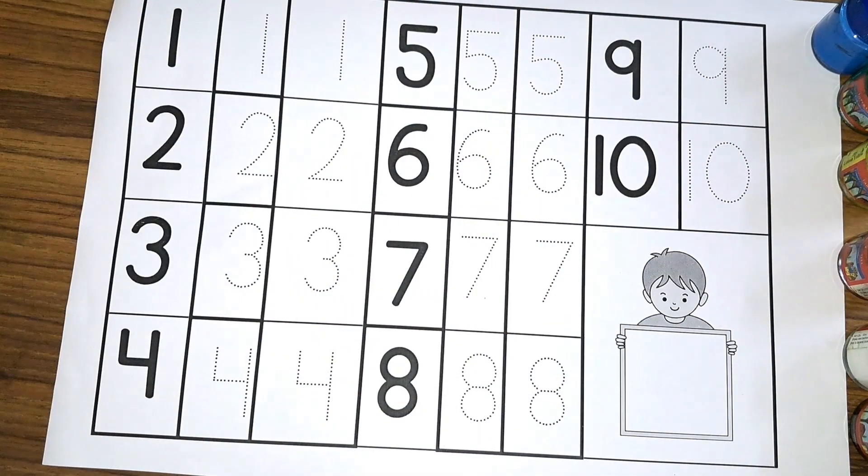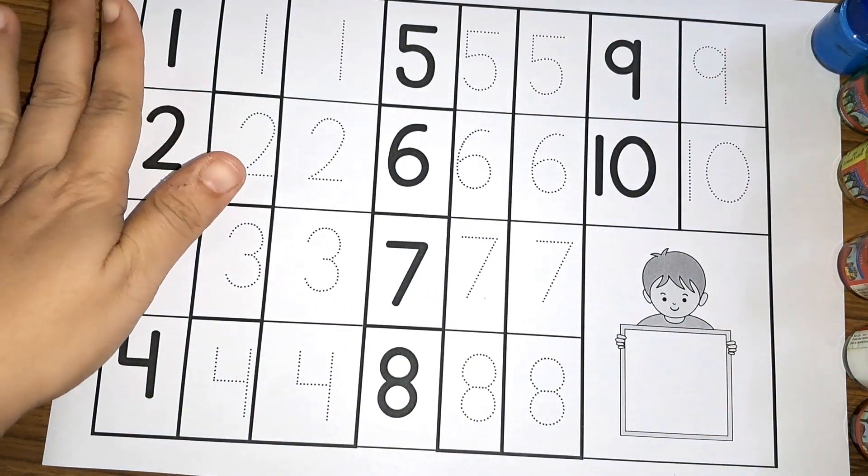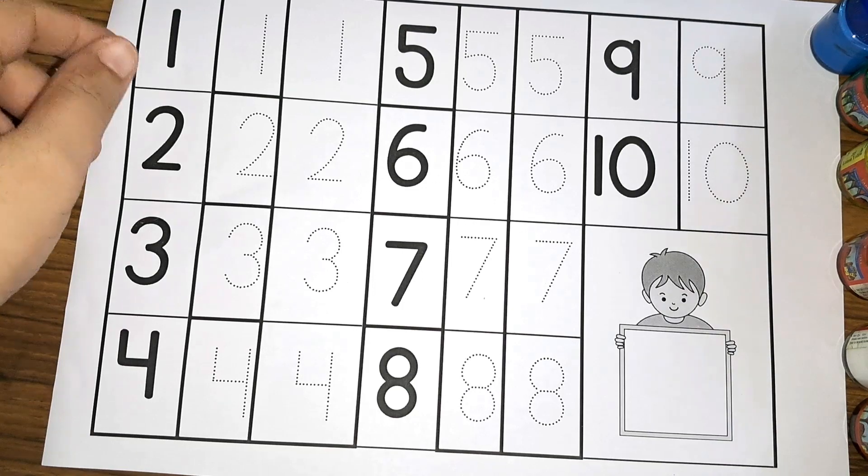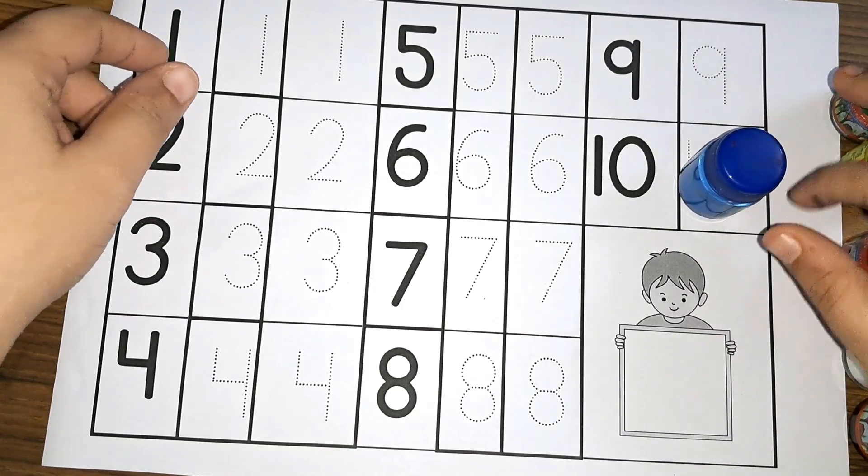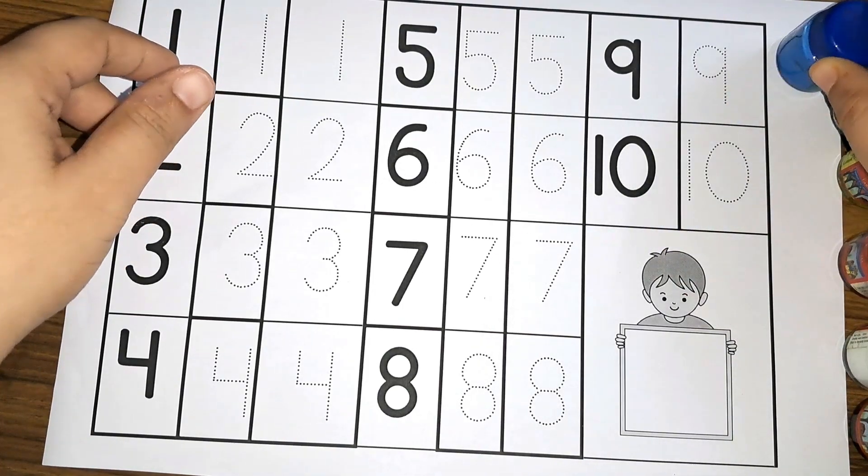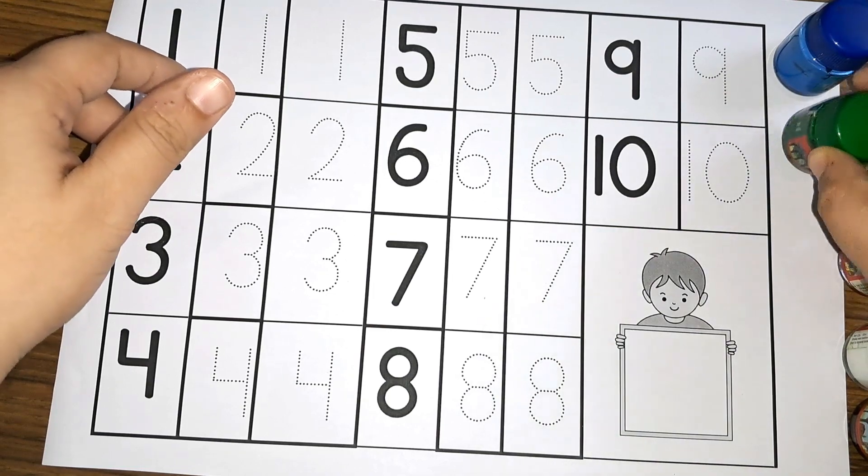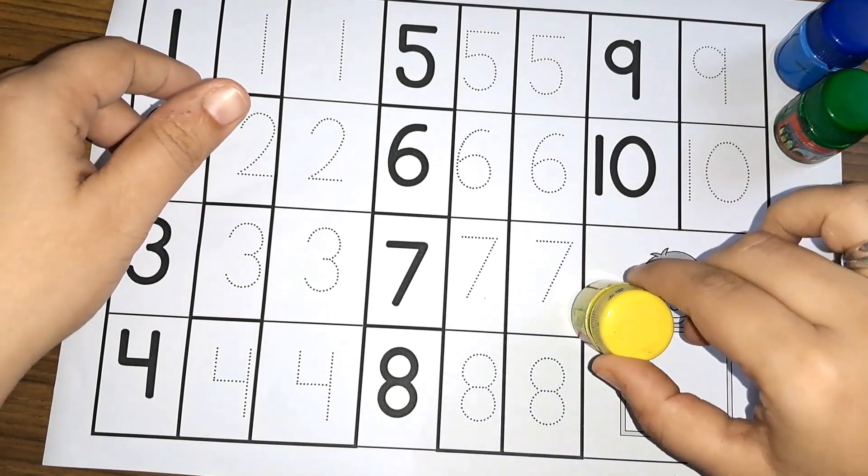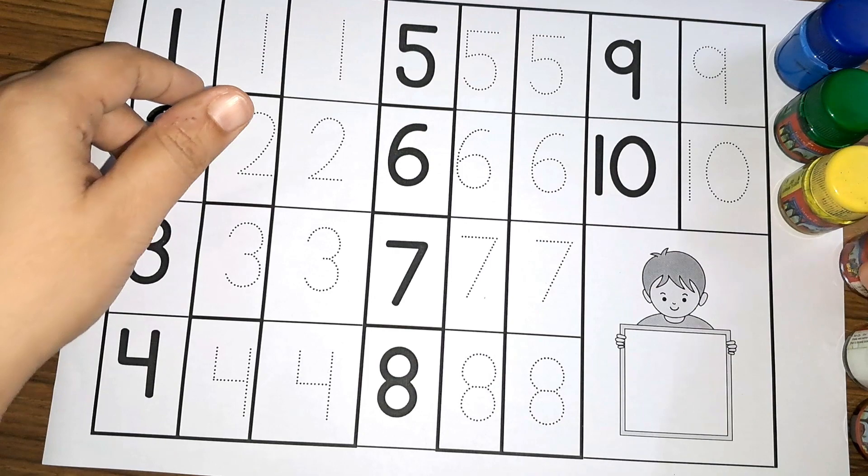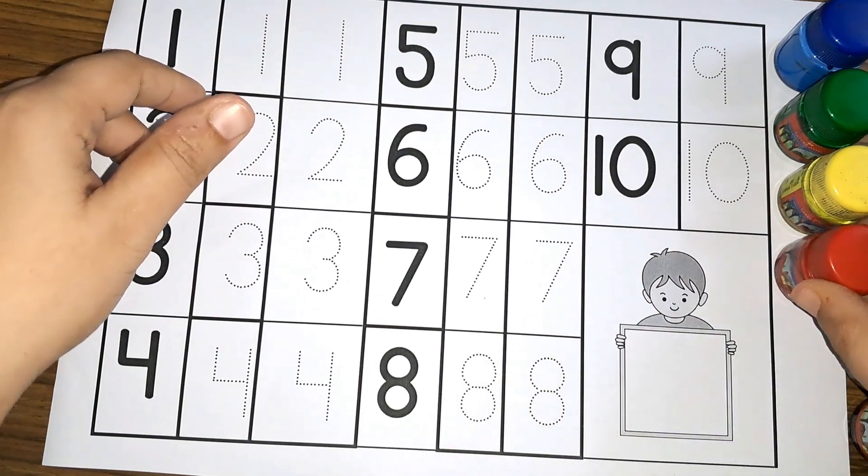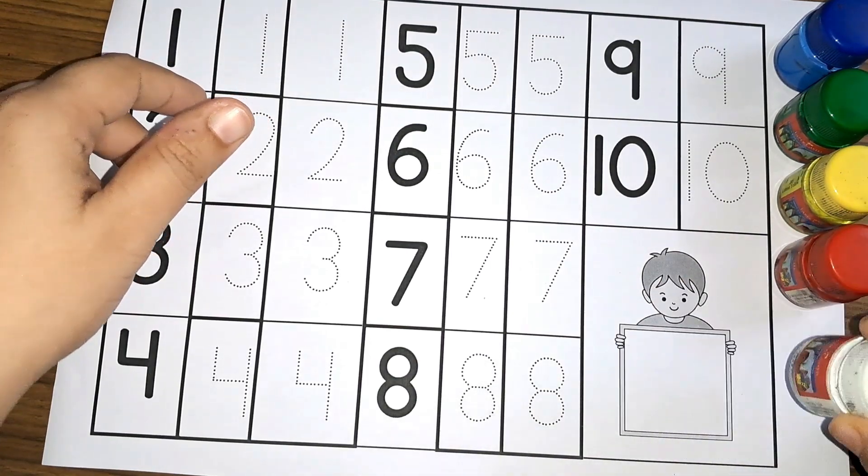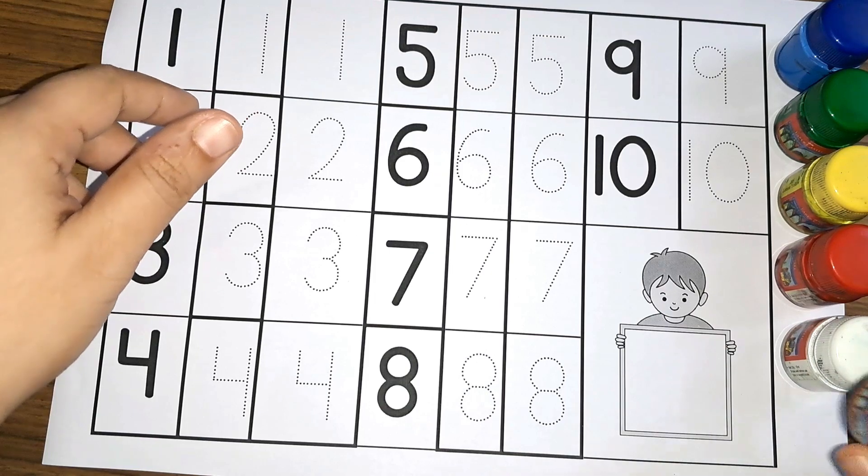Hello kids, let us learn some numbers today. First let us learn some colors: blue color, green color, yellow color, red color, white color, and black color.